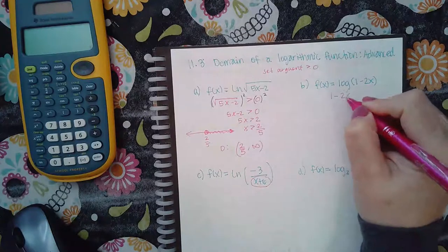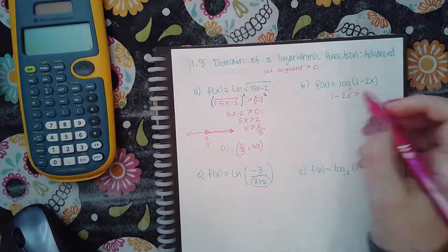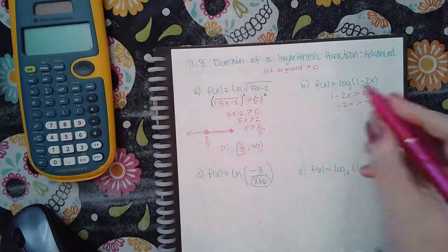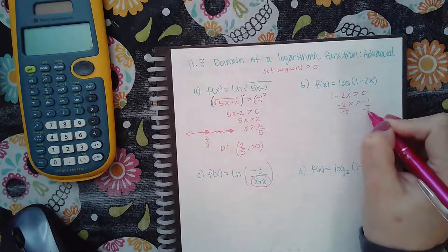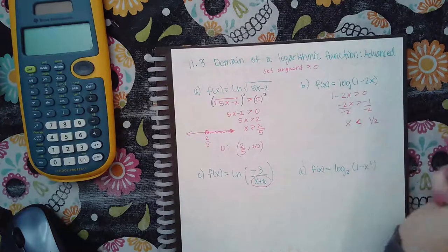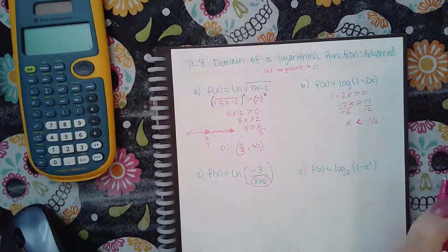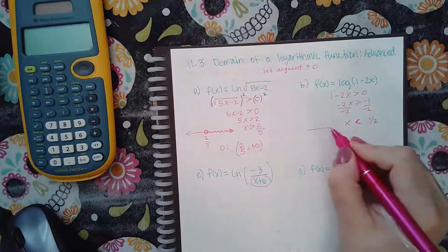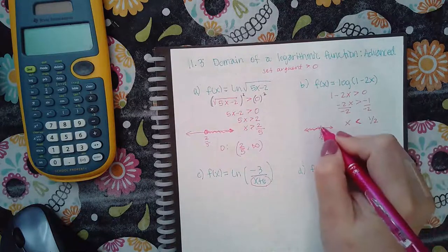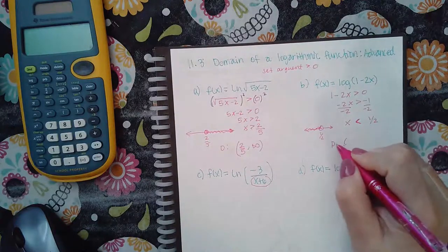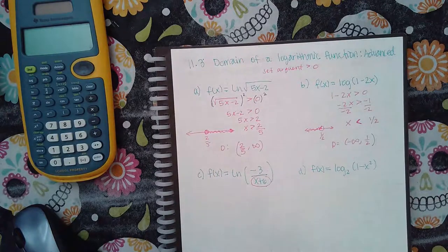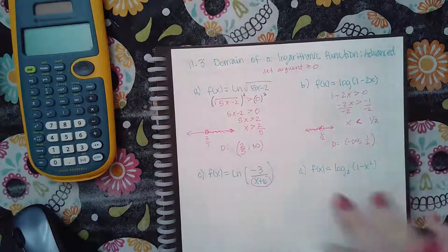Now let's go to the next one. We take our argument and set it greater than zero, move the negative one over, and then divide by a negative — remember, if you divide or multiply by a negative the inequality symbol flips. So we get x is less than one-half. On a number line, x less than one-half is to the left, and the open dot means my domain is negative infinity to one-half with an open parenthesis.